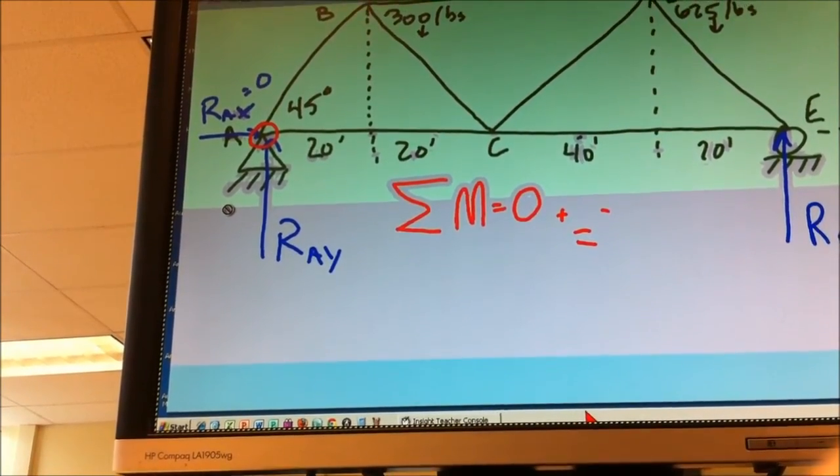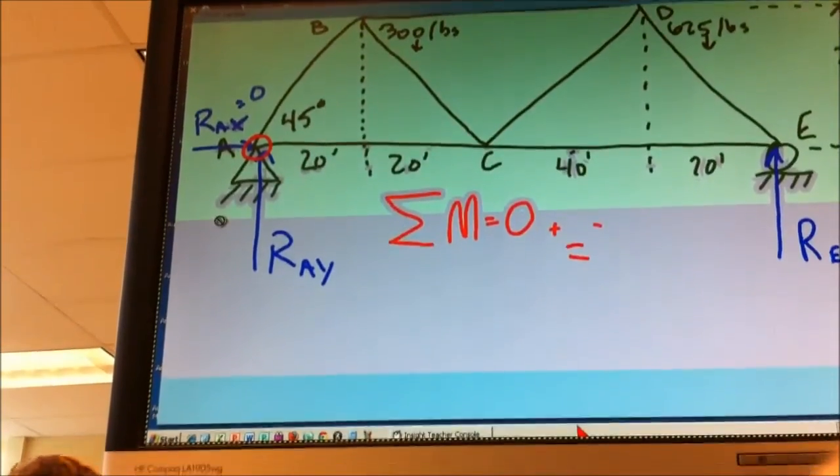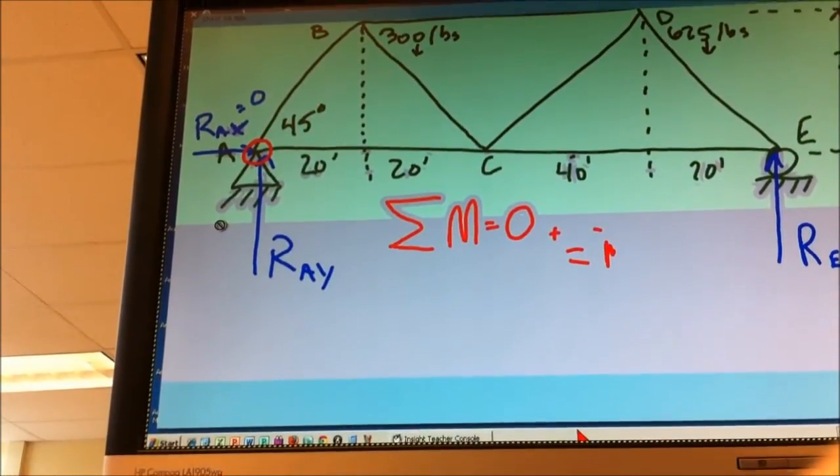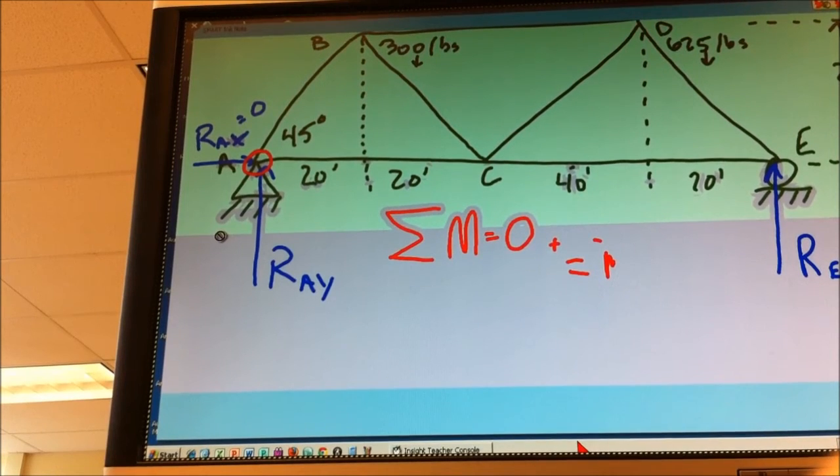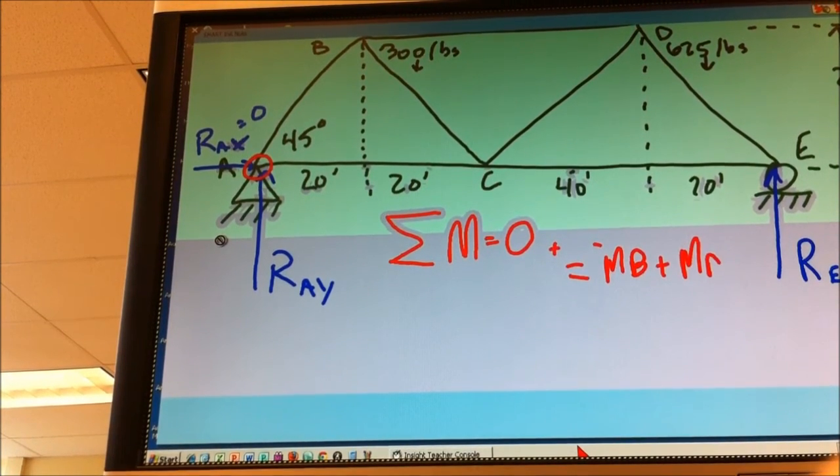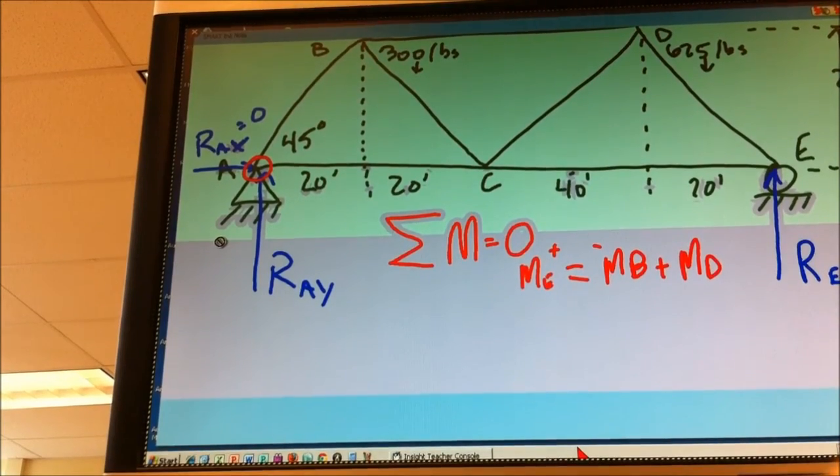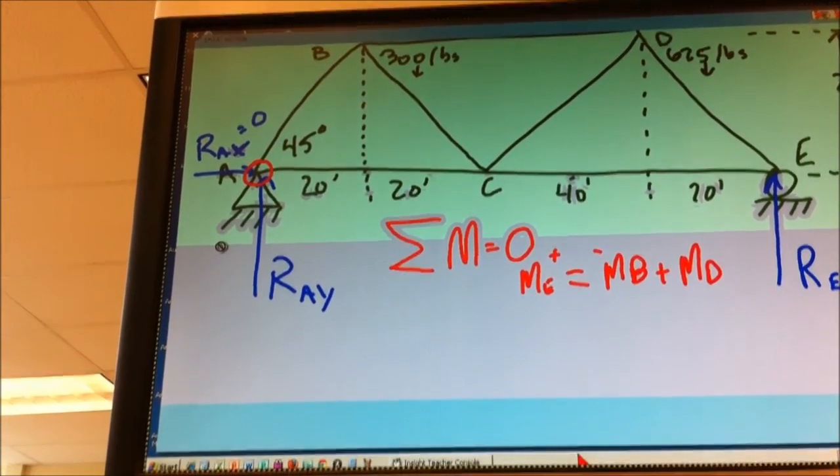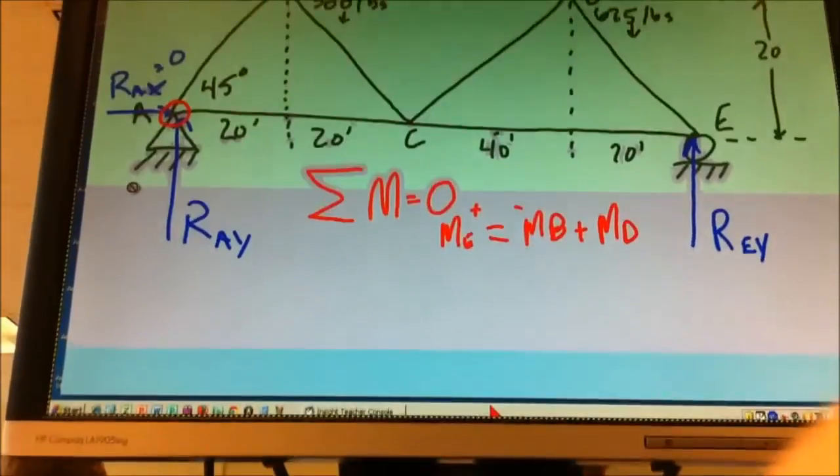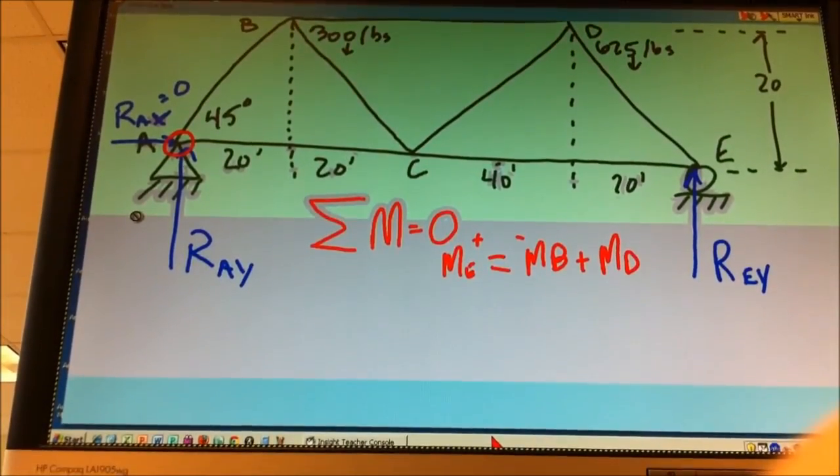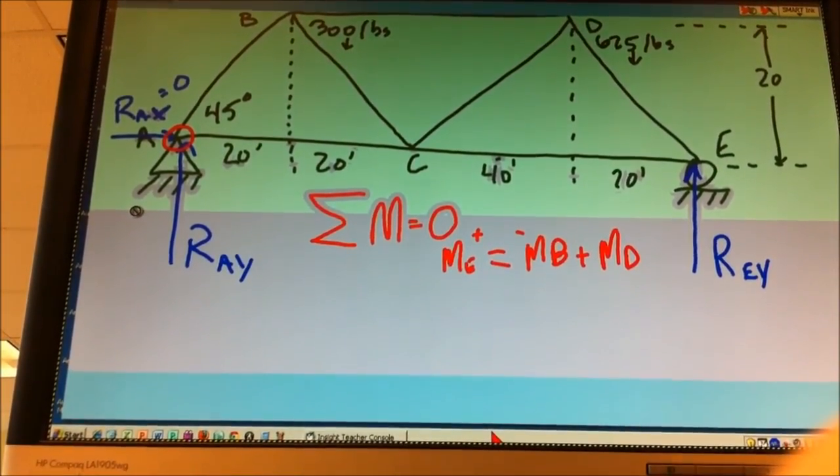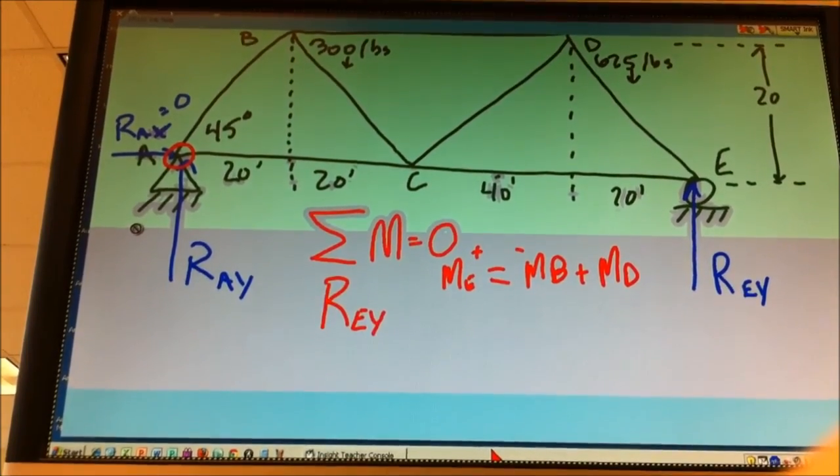Now the negative ones, we've got 300, we've got point B here. So moment B will be right here, plus moment D, and then moment E is a positive. Let's fill out the equation for moment E. What's our force at moment E, or at E? You said R_EY and you were correct. Yes.